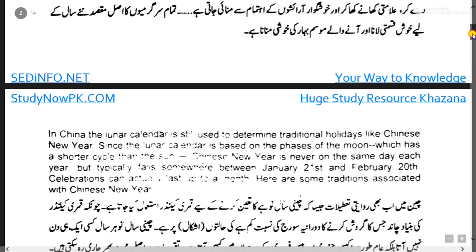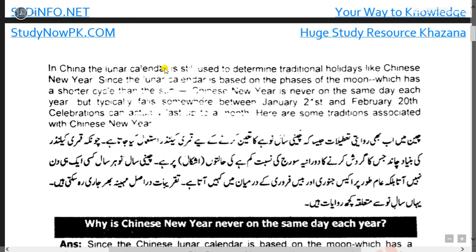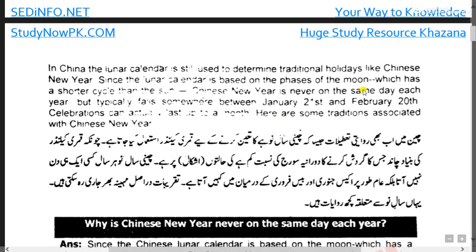ہم آگے move کرتے ہیں دوسرے پیراگراف پر۔ In China, a lunar calendar is used to determine traditional holidays like Chinese New Year, since the lunar calendar is based on the phases of the moon. چین میں روایتی تعطیلات جیسا کہ چینی سالِ نو کا تعین کرنے کے لیے قمری کیلنڈر استعمال کیا جاتا ہے۔ چونکہ قمری کیلنڈر کی بنیاد چاند پر ہے جس کا گردش کا دورانیہ سورج کی نسبت کم ہے — which has a shorter cycle than the sun — Chinese New Year is never on the same day each year.